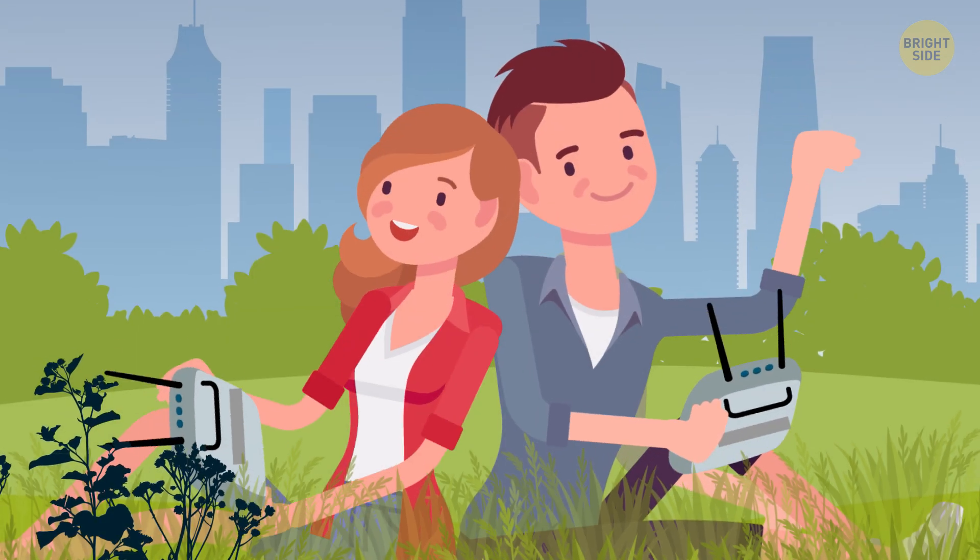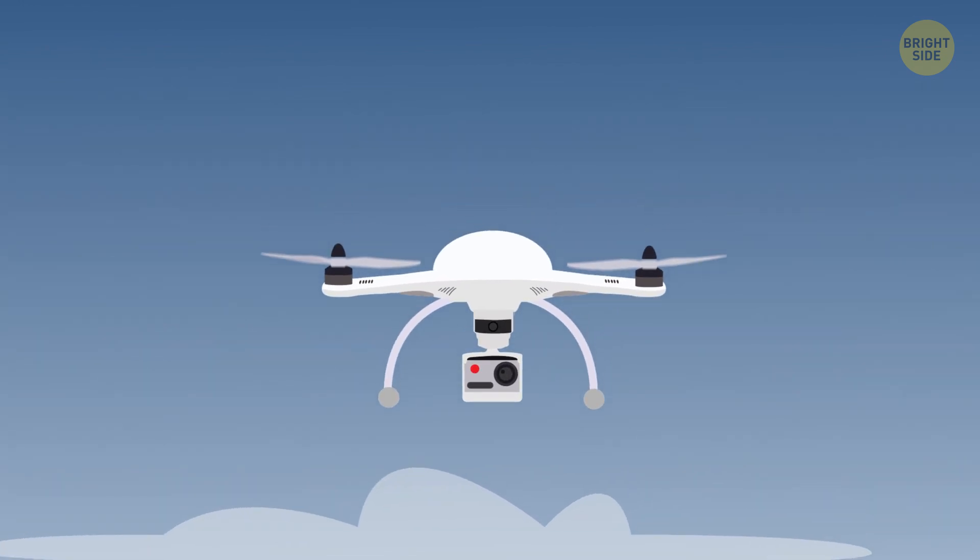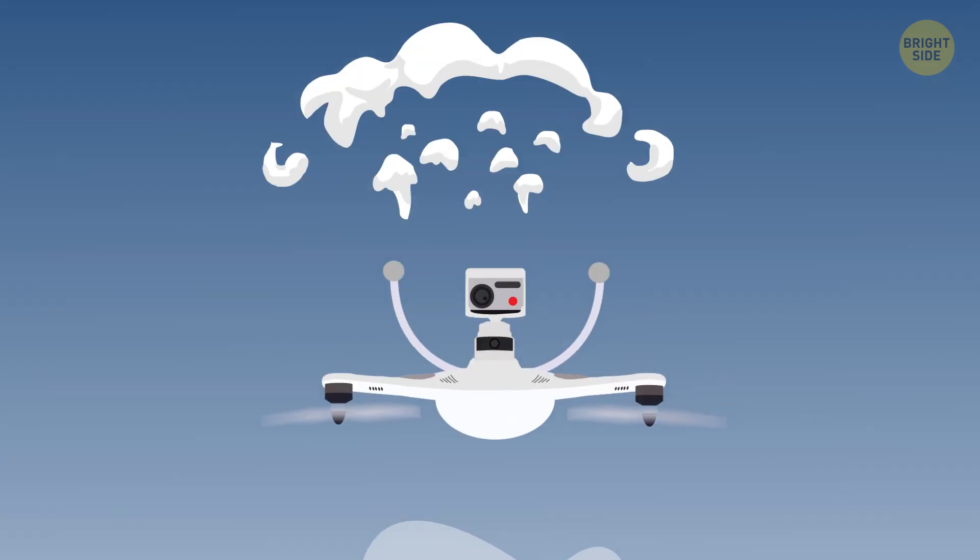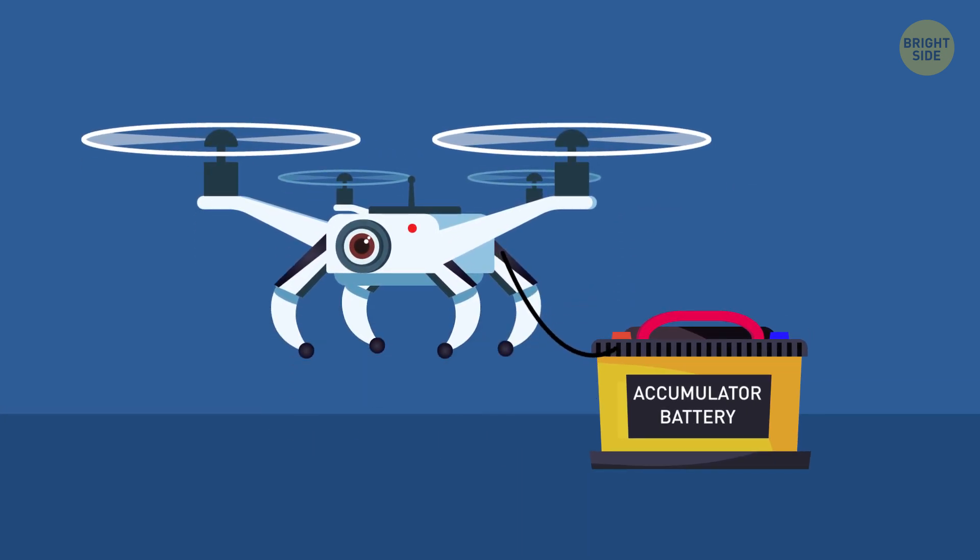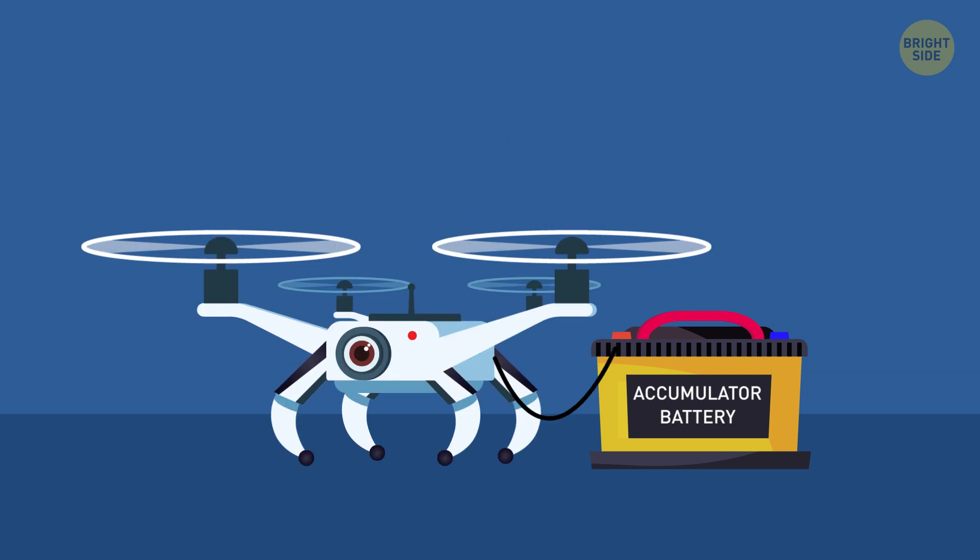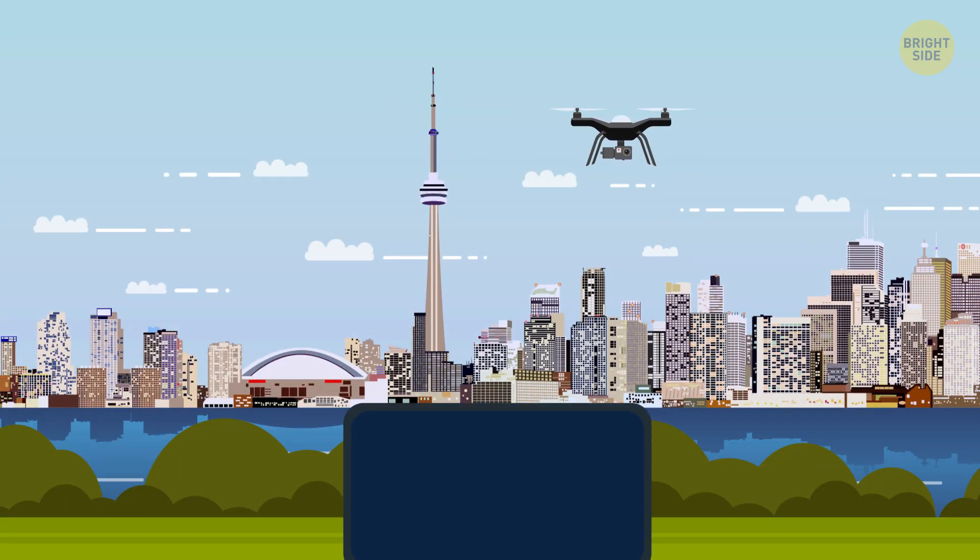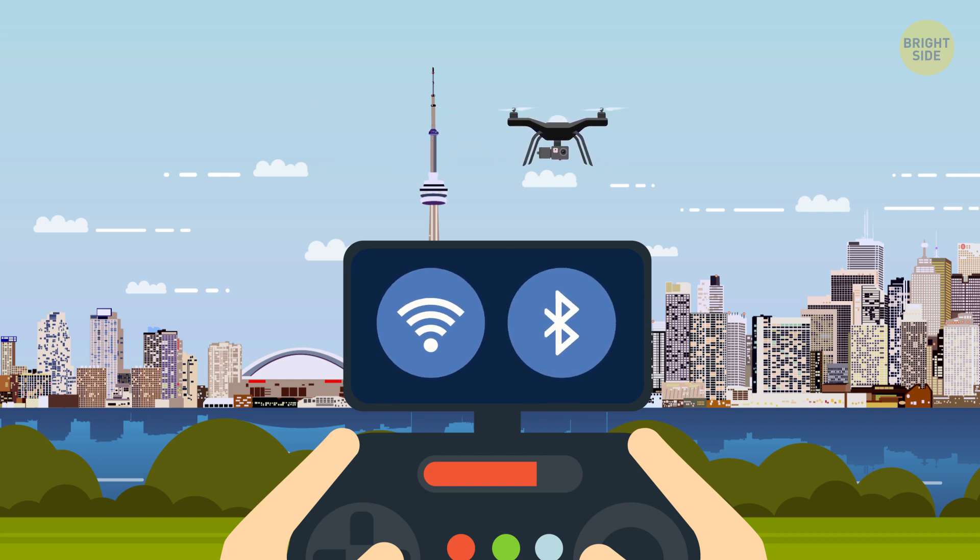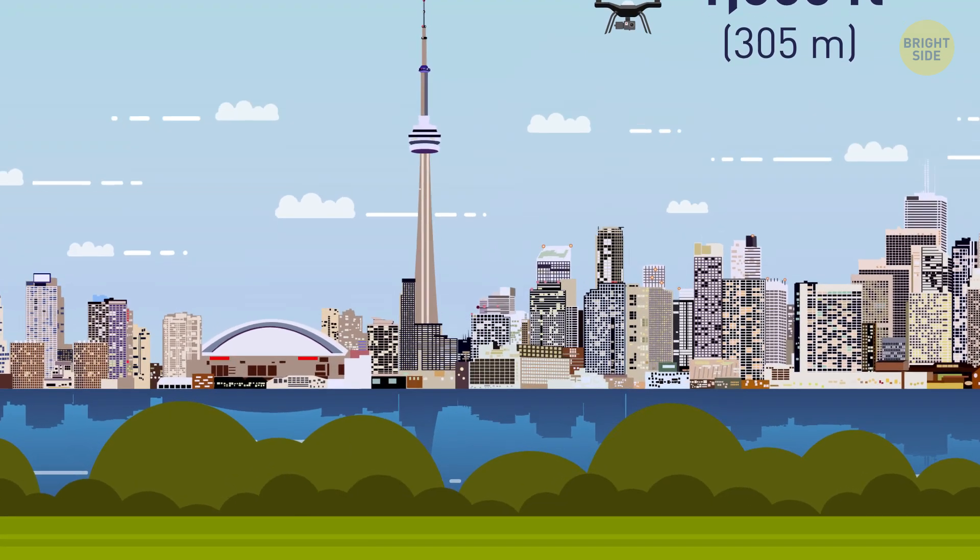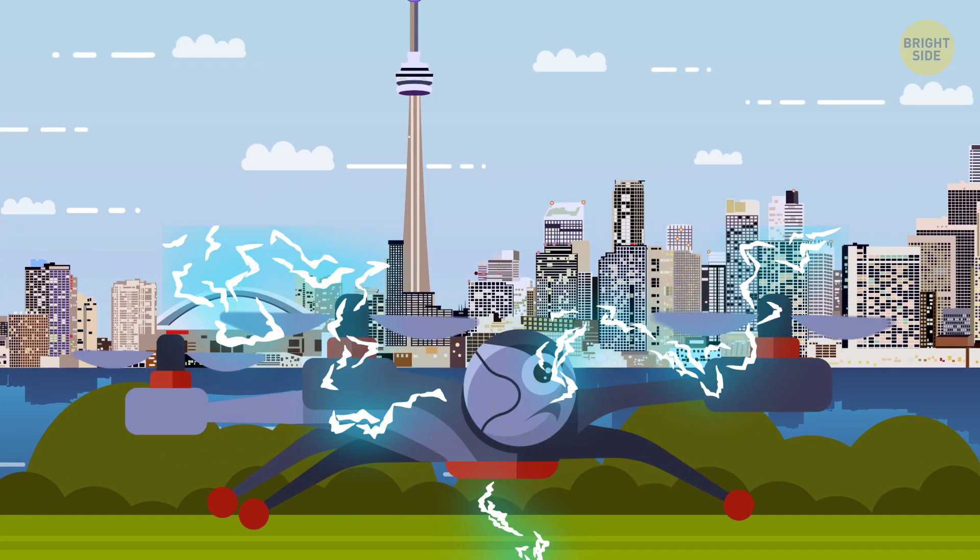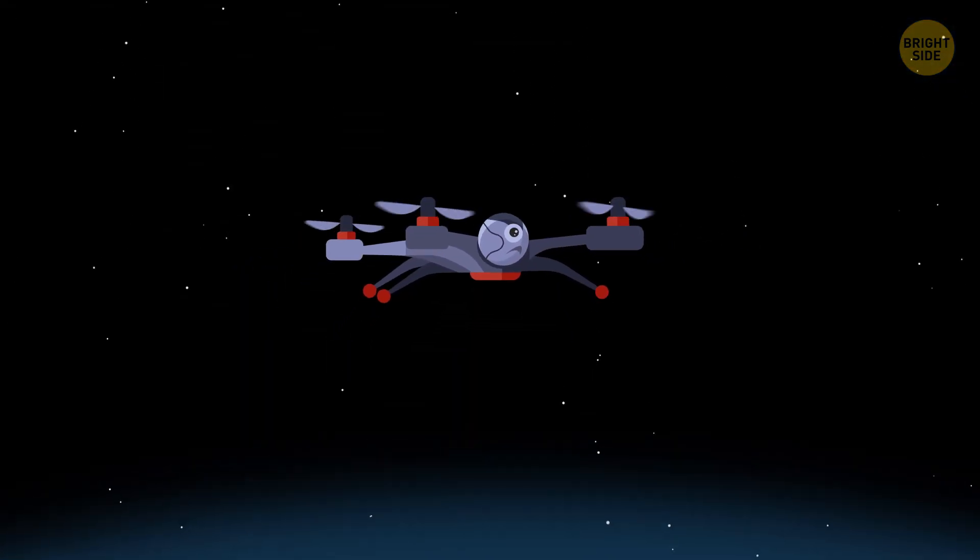At the same time, quadcopters can't boast particular stamina. Your average drone with a rechargeable battery can fly for no longer than 30 minutes. It's difficult for producers to increase this time because more powerful batteries add unnecessary weight to the device. Plus, most quadcopters can't fly too far away. They're connected with their controllers through Wi-Fi or Bluetooth. And if they fly more than 1,000 feet away, the signal will be lost. Although that doesn't mean that more advanced and expensive drones can't fly way further and spend much more time in the air.